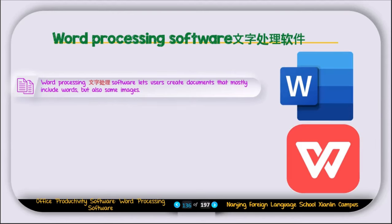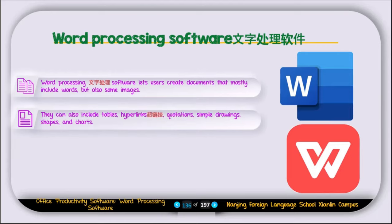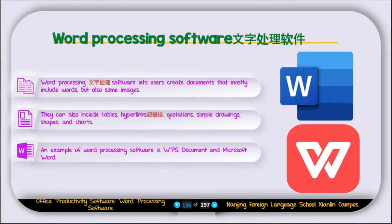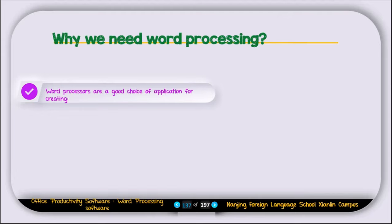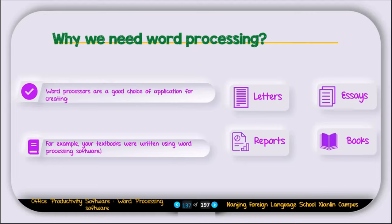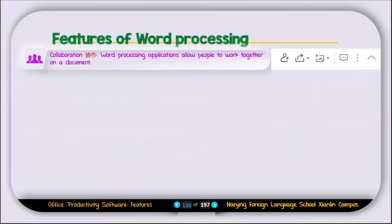Now let's talk about word processing software. Word processing software lets users create documents that mostly include words but also images, tables, hyperlinks, quotations, simple drawings, shapes, and charts. An example of word processing software is WPS or Microsoft Word. Word processing is a good choice for creating letters, essays, reports, and books. For example, your textbook was written using word processing software.